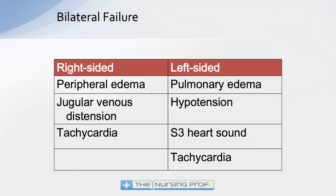We also need to differentiate right-sided from left-sided heart failure. Right-sided failure backs up into the periphery, causing peripheral edema, jugular venous distension, and tachycardia. Left-sided dysfunction pumps into the systemic circulation but backs up into the lungs, causing pulmonary edema, hypotension, S3, and tachycardia. Tachycardia is common to both. In either case the heart is trying to compensate for not pumping as well as it should.